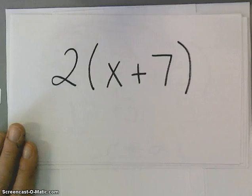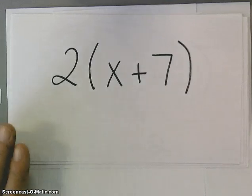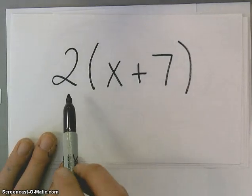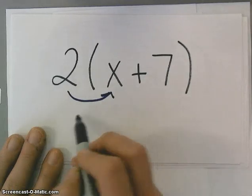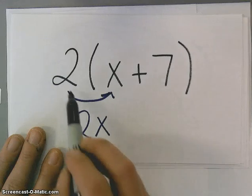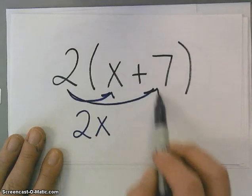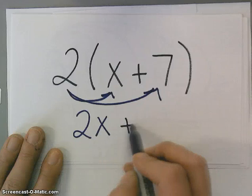Another example, we have 2 times the quantity x plus 7. I'm going to take 2, and I'm going to distribute 2 times x. I'm going to get 2x. And I'm going to take 2, and multiply that by 7, and I'm going to get plus 14.